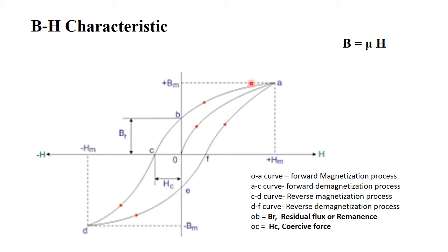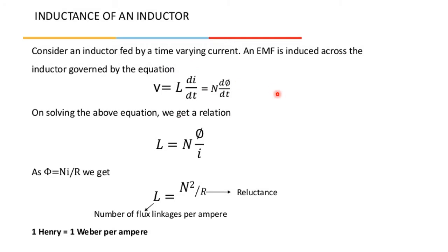The hysteresis loss depends on the area of this BH loop. If the area is less, hysteresis loss will be less; if the area is high, hysteresis loss will be high. Inductance can be calculated using V = L·di/dt = N·dφ/dt, giving L·i = N·φ, so L = N·φ/i. Since flux φ = N·i/R (where R is reluctance), substituting gives L = N²/R.